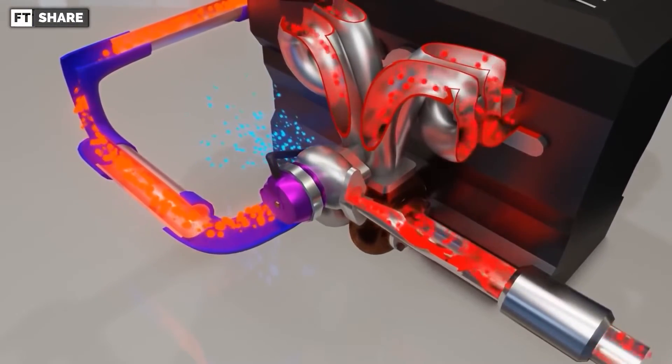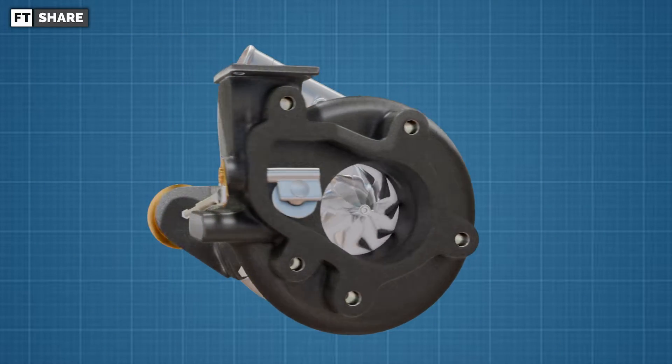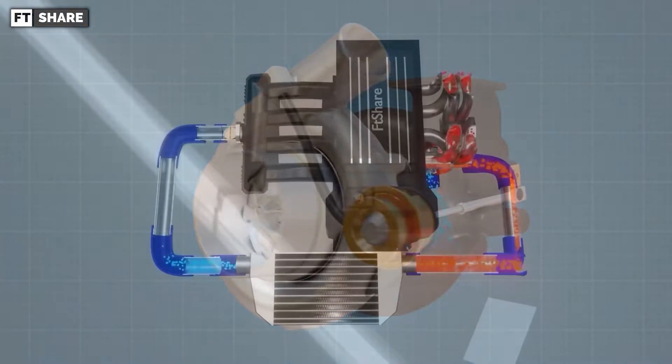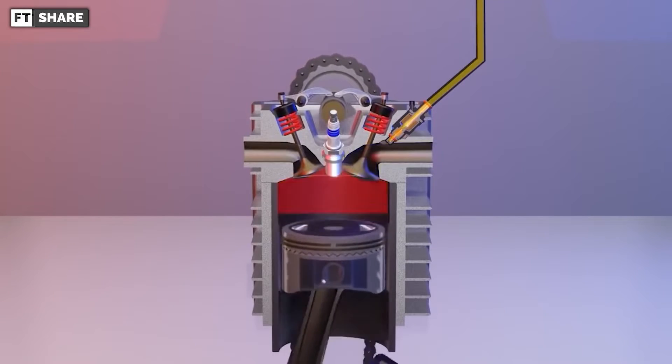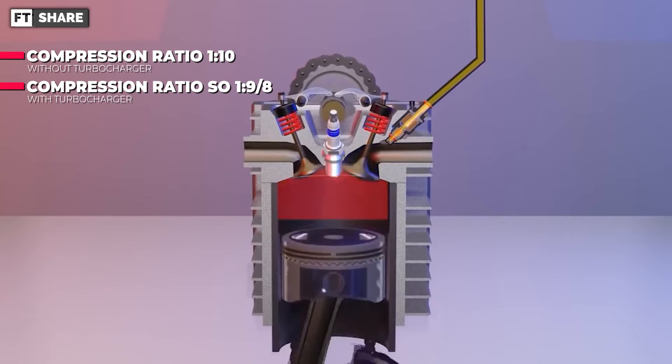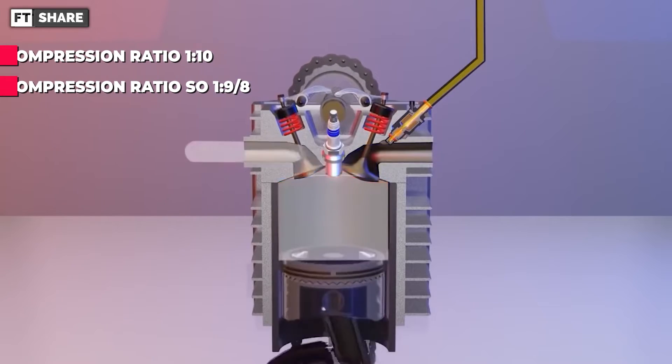That's basically how a turbo system works. However, using a turbo has its drawbacks. To use it, compression ratios need adjusting to allow more fuel. For example, for gasoline engines, a compression ratio of 1 to 10 might decrease to 1 to 8 or 1 to 9.